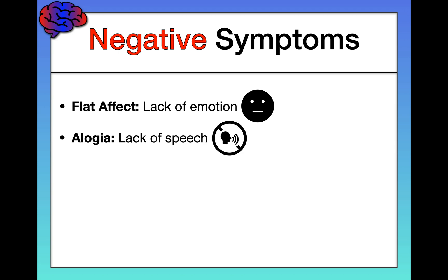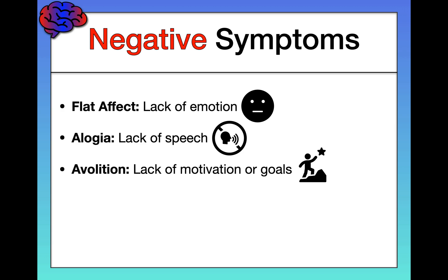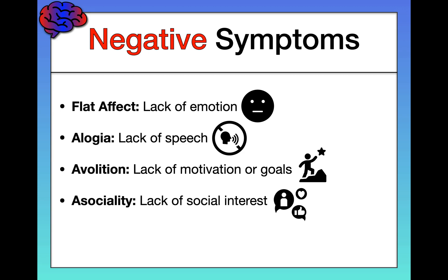Second, alogia, which is a lack of speech — maybe they're talking very softly or not at all. Avolition is a lack of motivation or goals; they're wandering around aimlessly without any purpose. Asociality is a lack of social interest — not really interested in people around you, what they're doing, what they're saying.